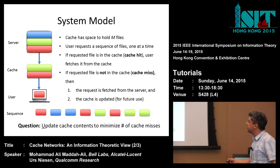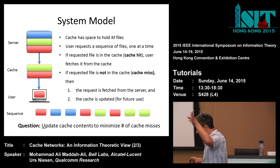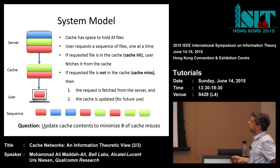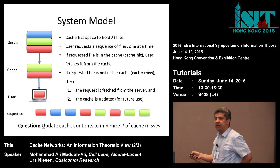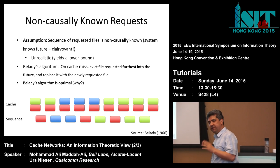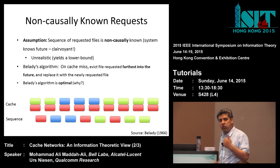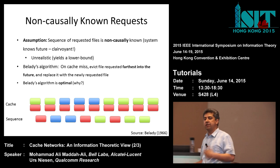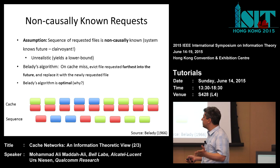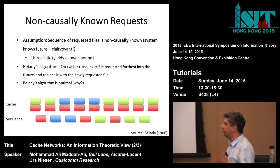Why minimize misses? Because we need to fetch the file from the server, which can be in a remote area — the delay to fetch the file from the server can be large. So we start with a very non-realistic case: assume that you know the sequence of demands non-causally. So you know that in the future, the user will first ask for the red file, then the blue file, then blue file, and so on.